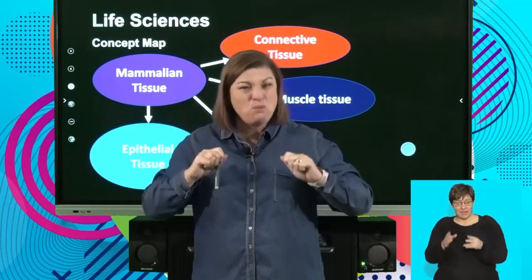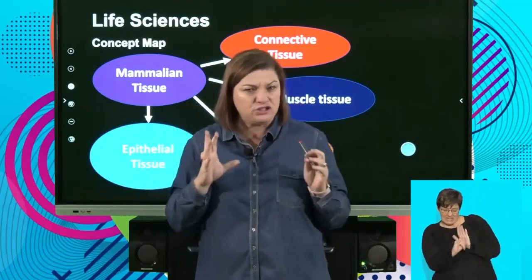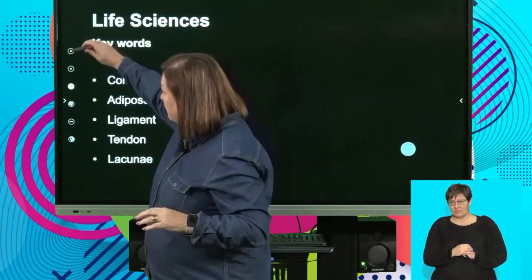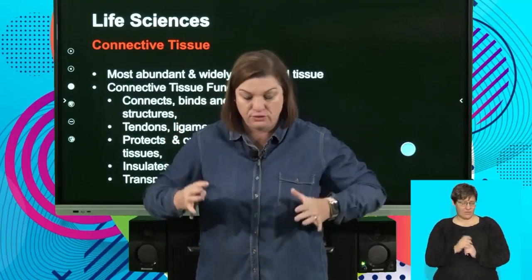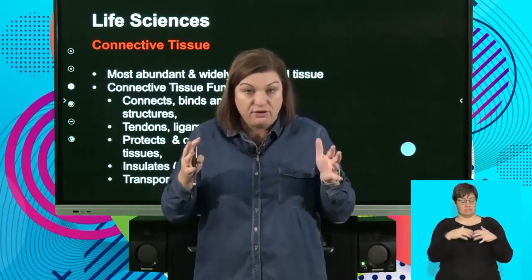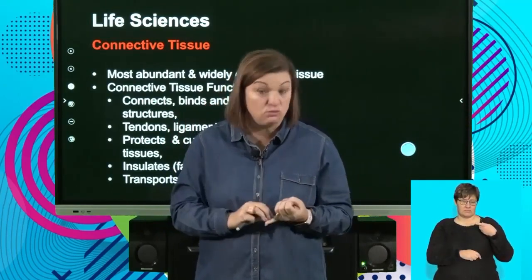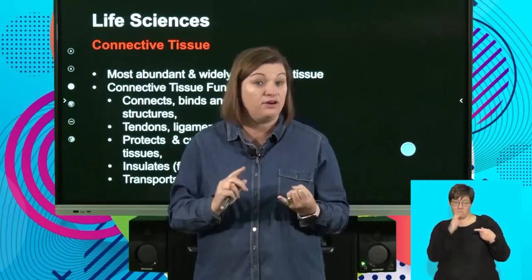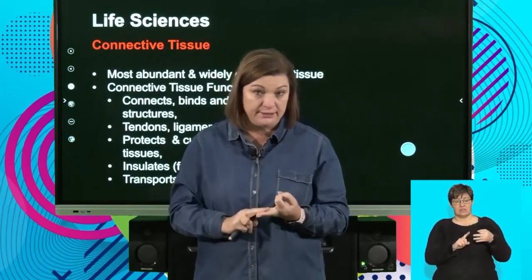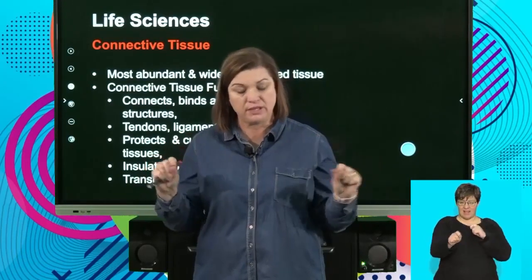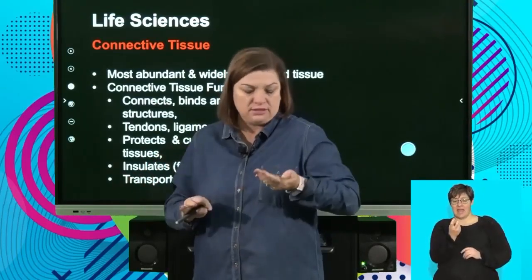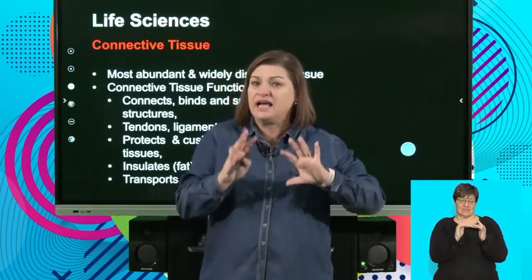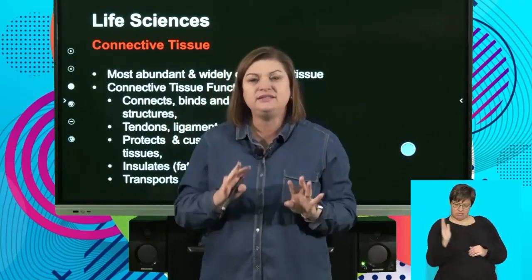The next tissue we're going to look at is somewhat more difficult to identify each time because the structure is slightly different. When we look at connective tissue, I want you to have the following with you: maybe some water, cement or jelly, an elastic band, a piece of string, and a hollow eggshell — take the egg and remove everything inside. That's how we're going to build connective tissue, unlike epithelial where all the cells are neatly in a row.